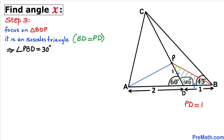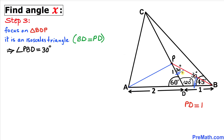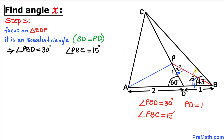Since triangle BDP is isosceles, the two base angles must be equal. With angle BDC equal to 120 degrees, the remaining two angles are 30 degrees each, since 120 + 30 + 30 = 180 degrees. So angle PBD is 30 degrees, and angle PBC is 45 minus 30 equals 15 degrees.